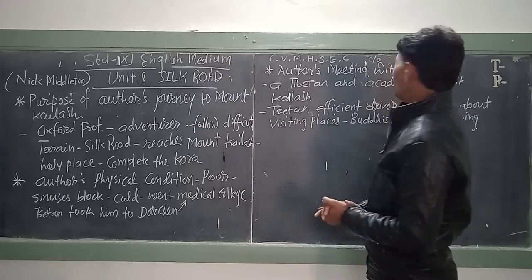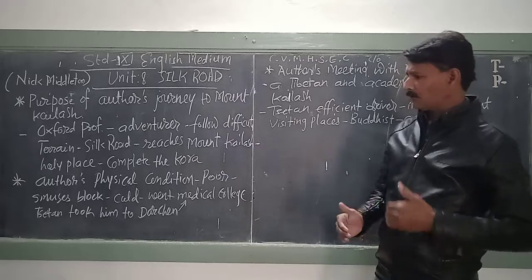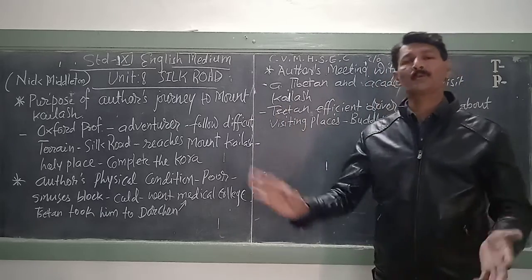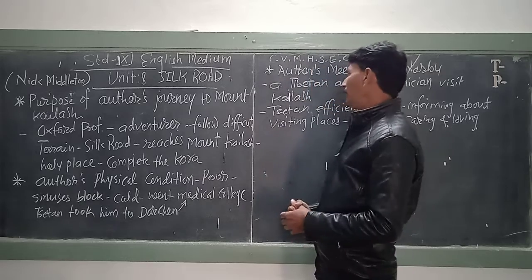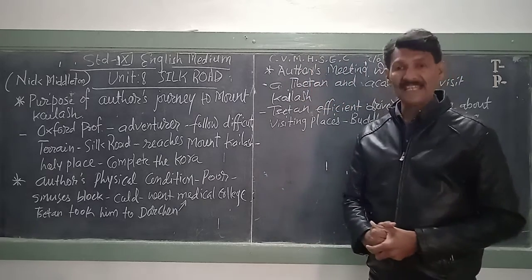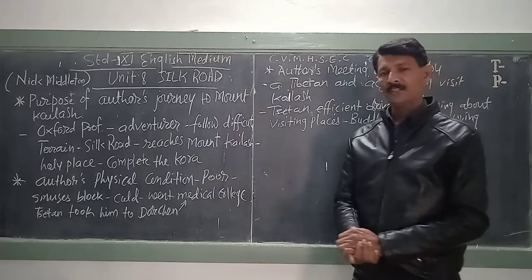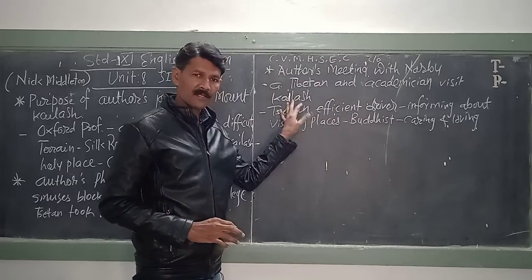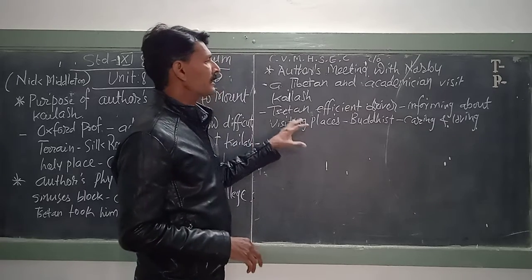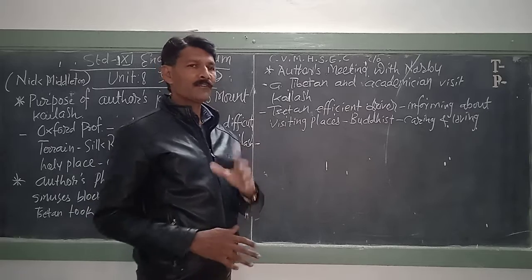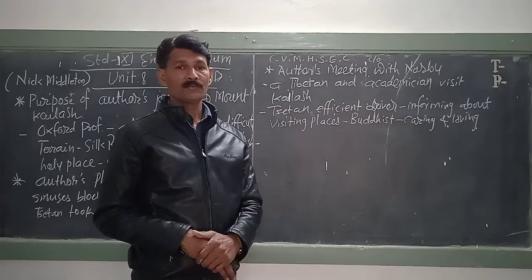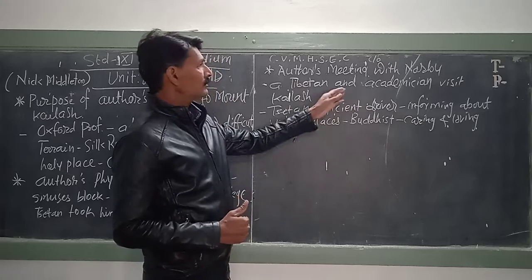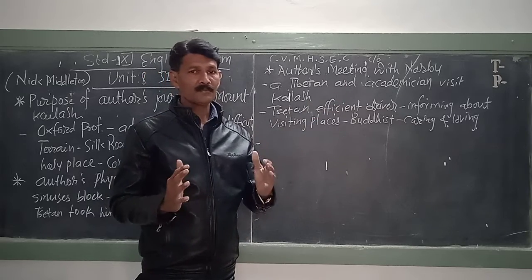On the way, the author also met a person called Narbu — again a Tibetan person and also an academician. As an academician, Narbu also wanted to get information about Mount Kailas. The purpose of his visit was to collect information about the importance of the place, and that forced him to visit this place. Narbu became a good friend of Nick Middleton, the author.